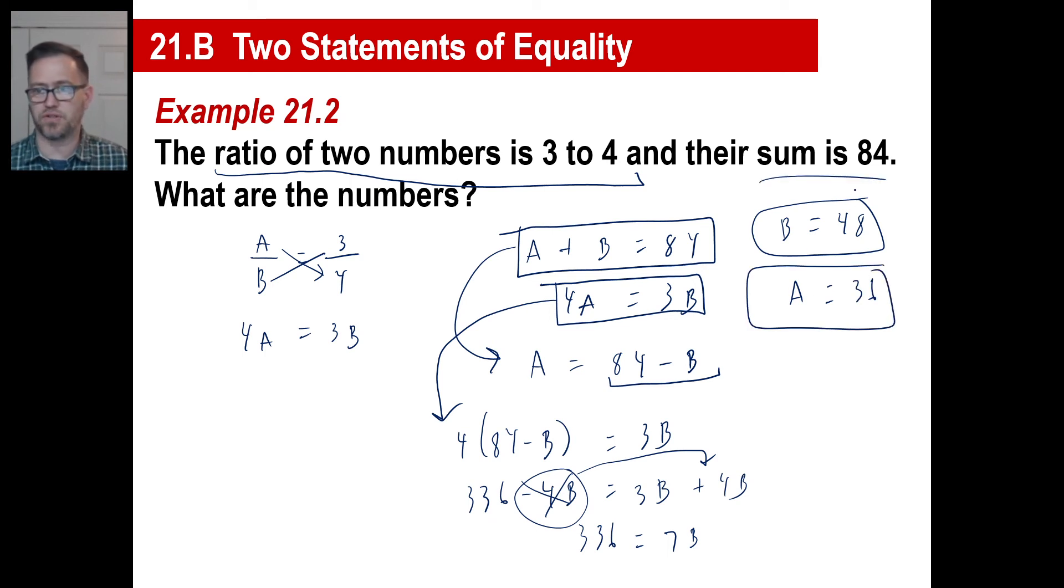My question for you is this. We know their sum is 84. Is there a ratio three to four? Well, yeah, three goes into 36 12 times. Let's do it this way. So 12 goes into 36 three times and 12 goes into 48 four times. So there's your three to four ratio. Boom, you got it.